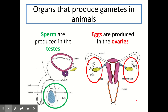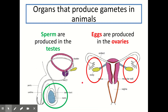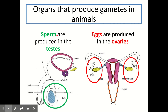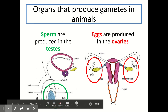We also have to know where gametes are located and be able to pinpoint them in a diagram. The male gamete sperm are produced in the testes — you do not need to label the rest of the male reproductive organs, just the testes. The female gametes, eggs, are produced in the ovaries — there are two ovaries, one on the left and one on the right. You should be able to label both the testes and the ovaries on a diagram.